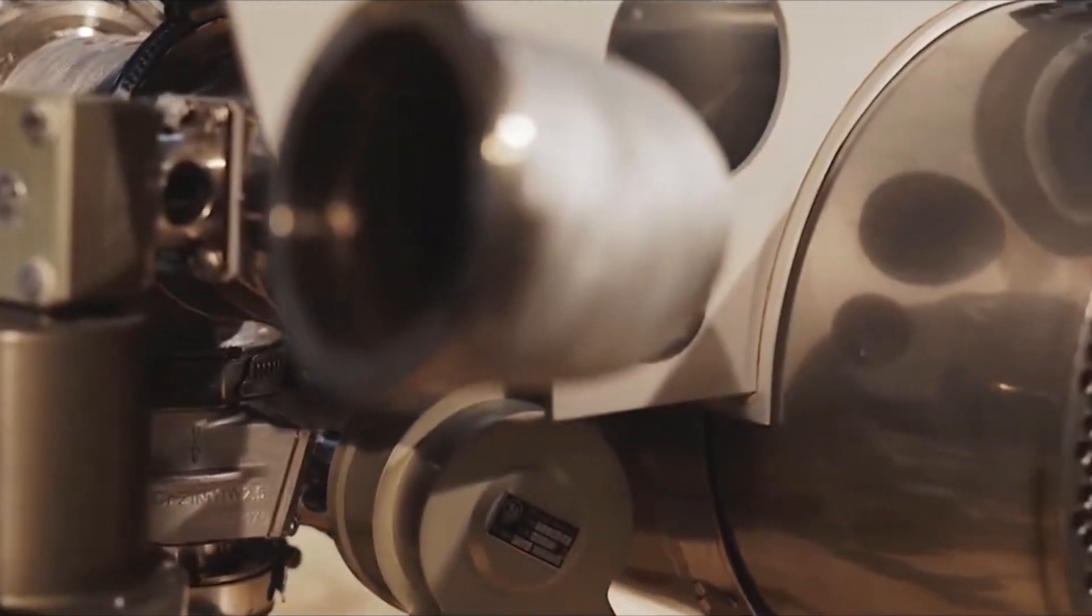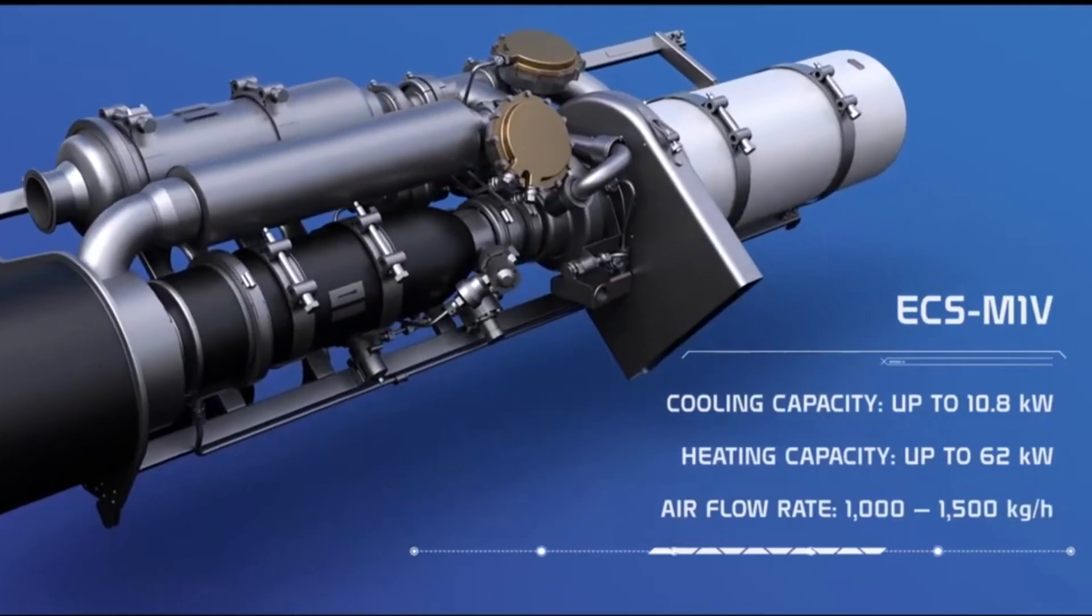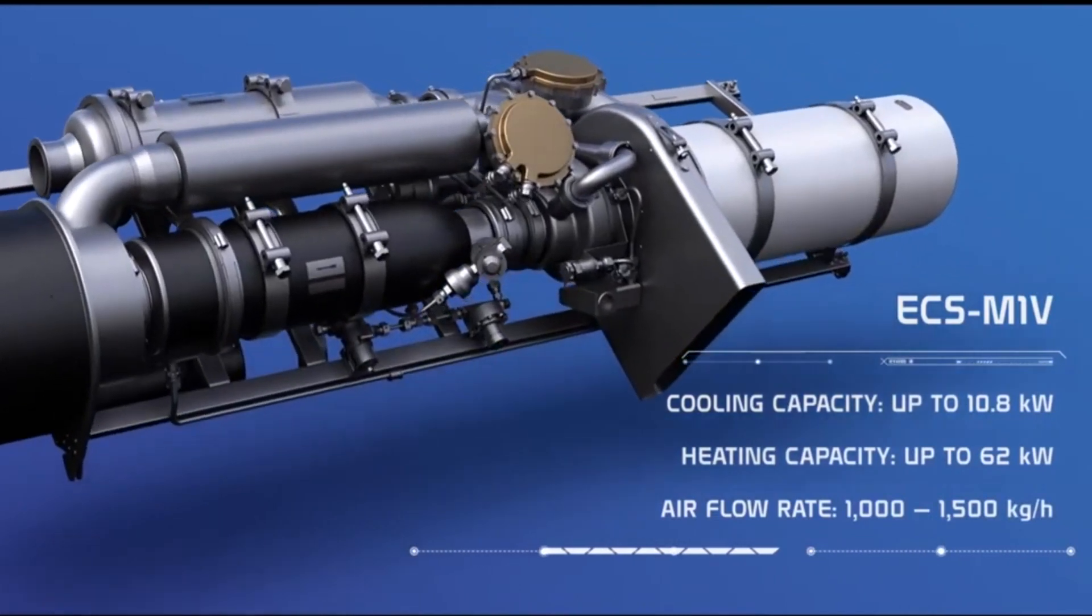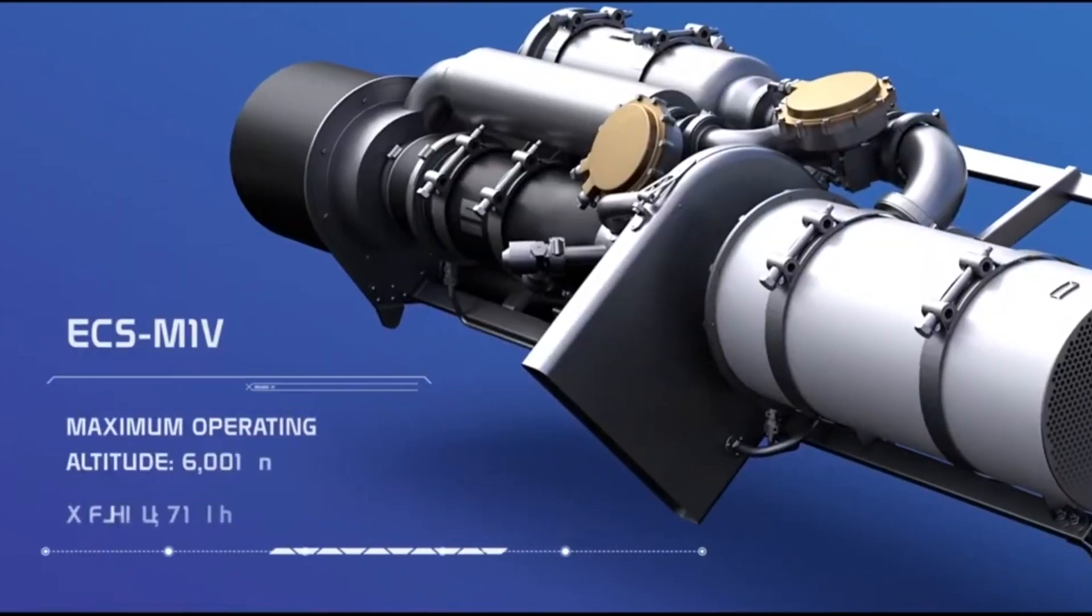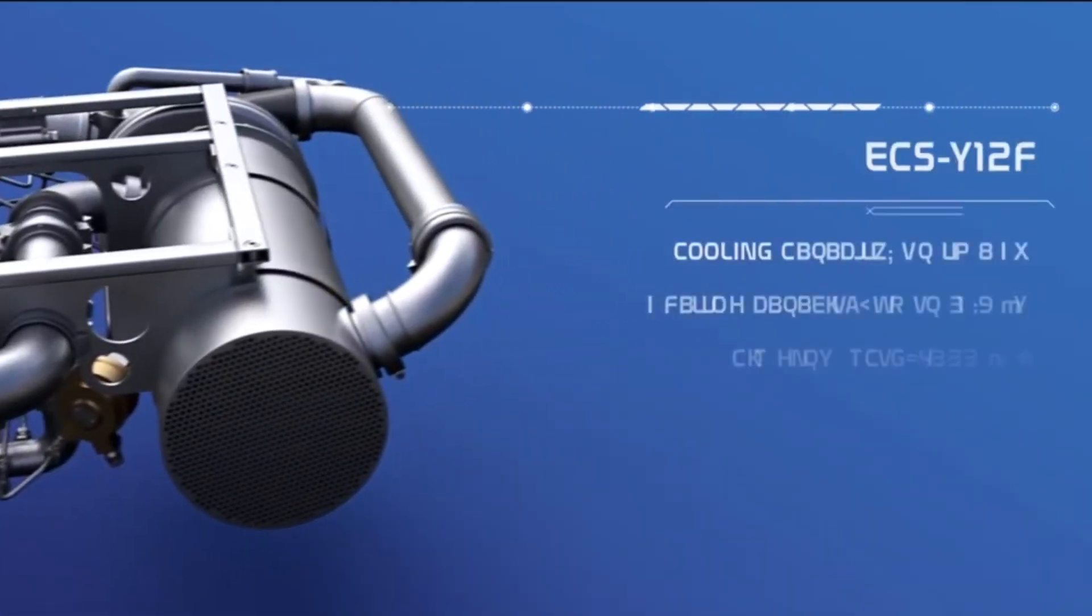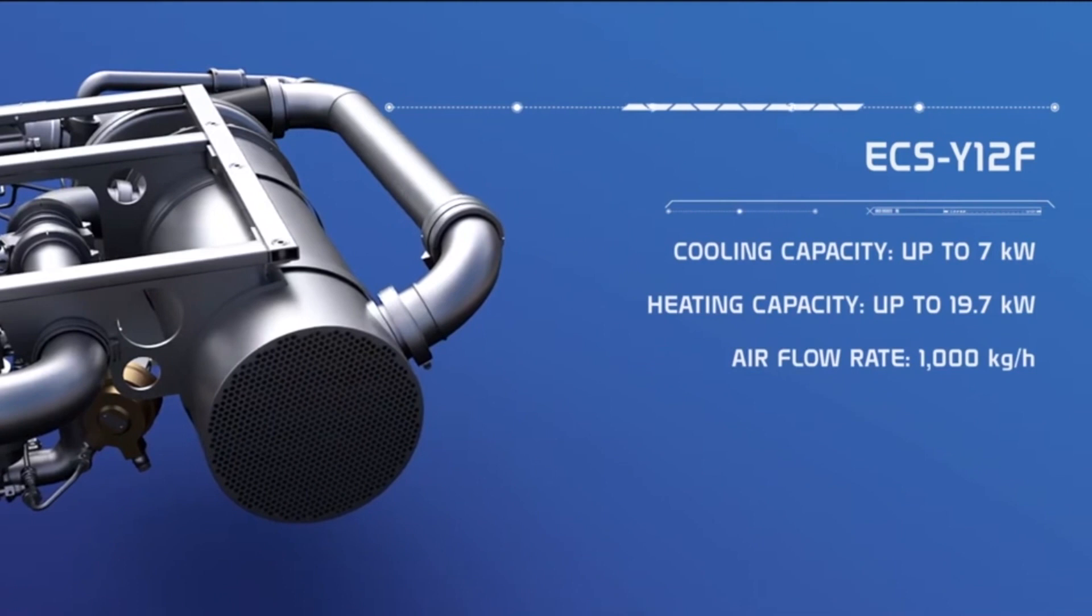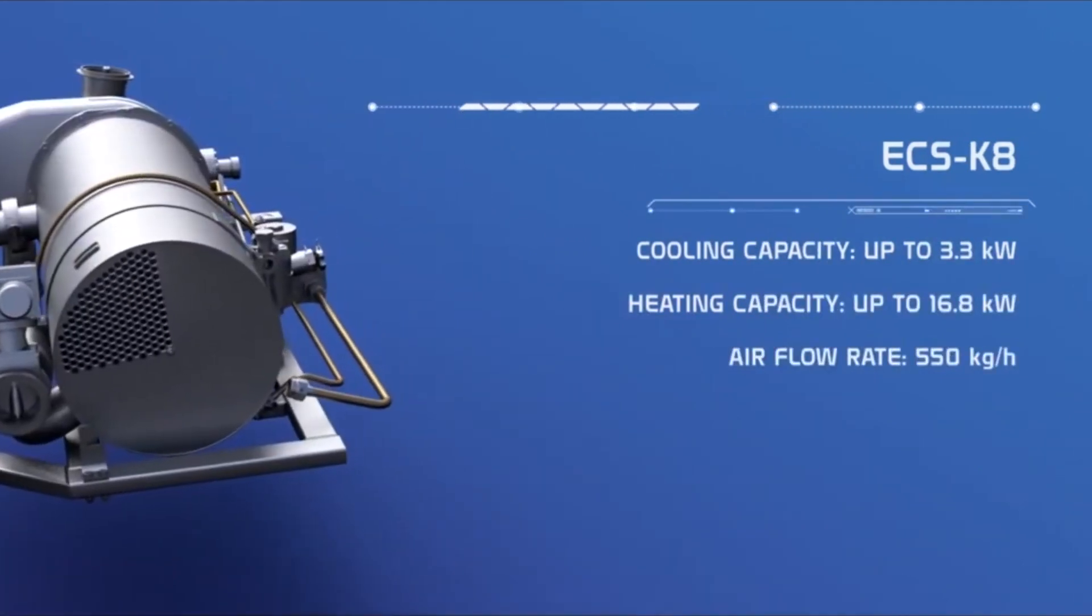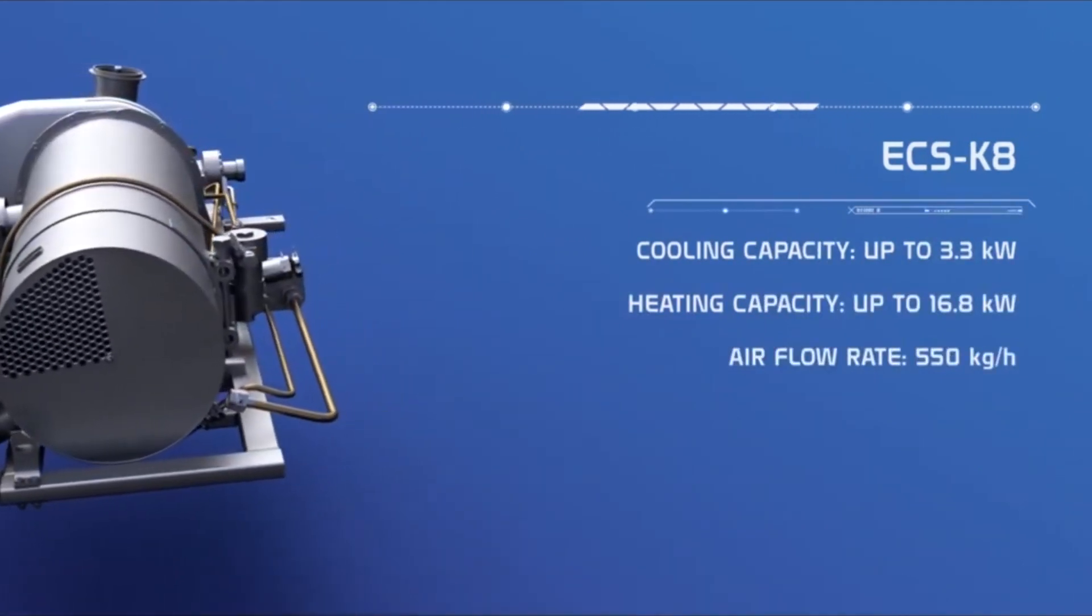Examples of aircraft environmental control systems include the ECS M1V, designed for air conditioning and ventilation of helicopters as well as cooling and heating. Another is the ECS Y12F with minimal power consumption, and the ECS K8 which also has minimum power consumption.